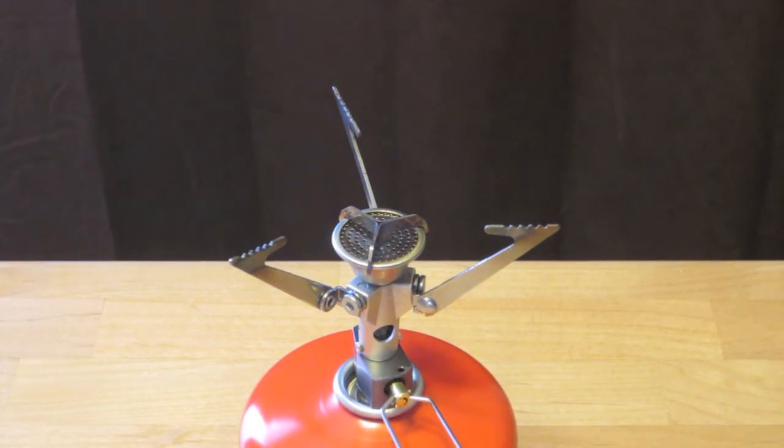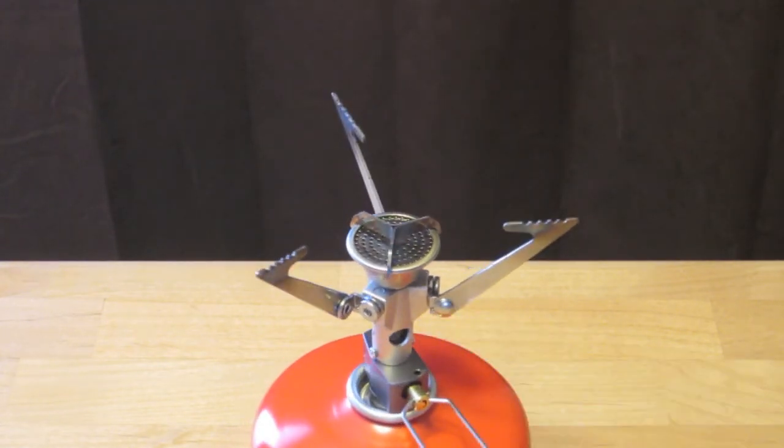So the MSR micro rocket did do a pretty good job in the wind test there, lasted through the three settings. I don't have any fans that do a higher setting than that, but that's a pretty good test. If you were to throw it behind a rock or something like that, if there was a higher wind, you'd probably be fine. But it does show that the windscreen does work fairly well on the MSR micro rocket.